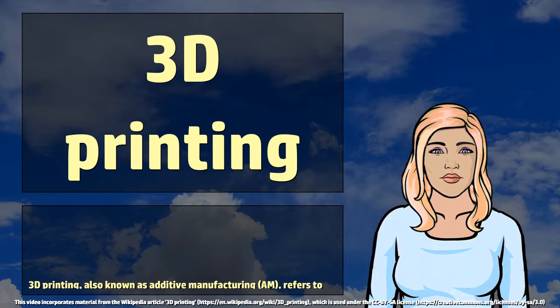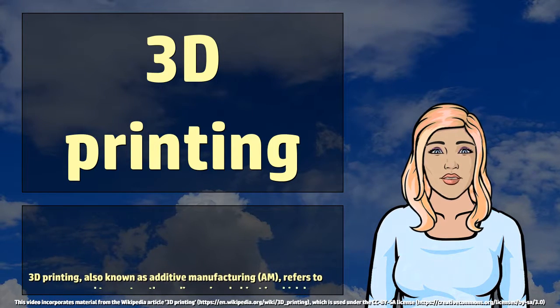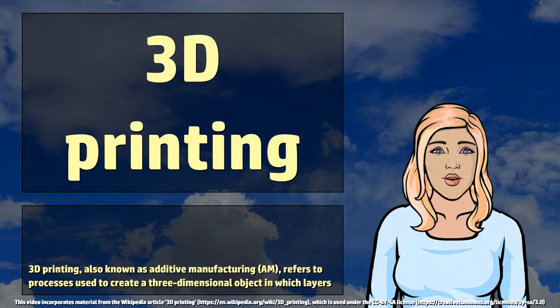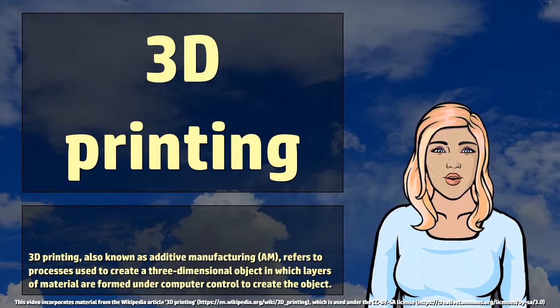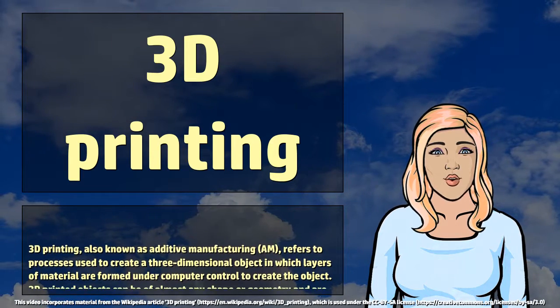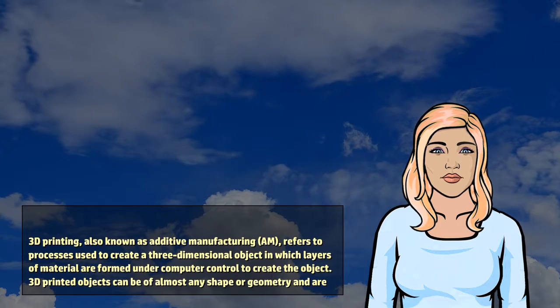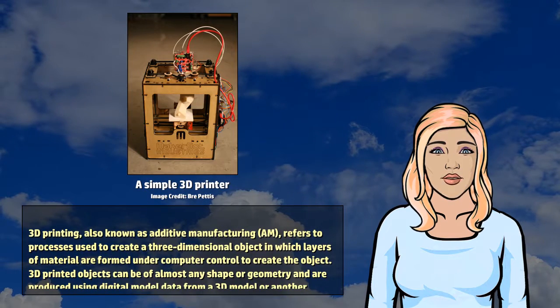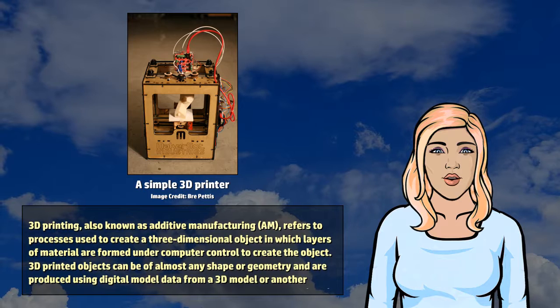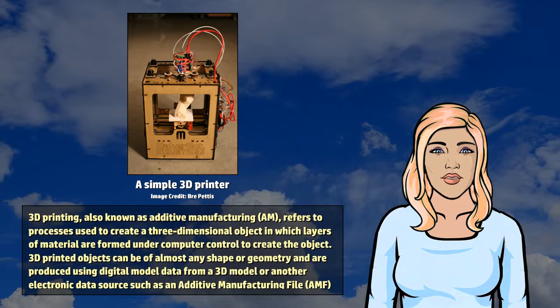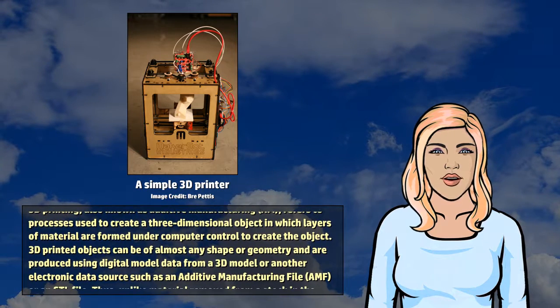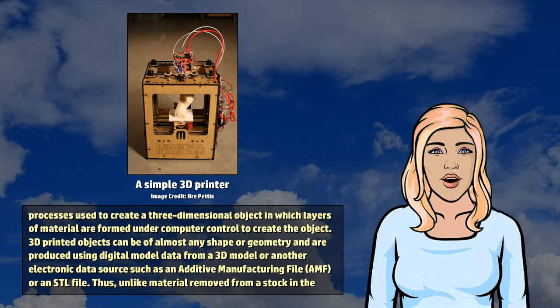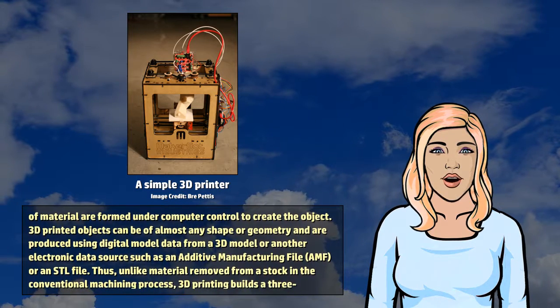3D printing, also known as additive manufacturing (AM), refers to processes used to create a three-dimensional object in which layers of material are formed under computer control to create the object. 3D printed objects can be of almost any shape or geometry and are produced using digital model data from a 3D model or another electronic data source such as an additive manufacturing file (AMF) or an STL file.